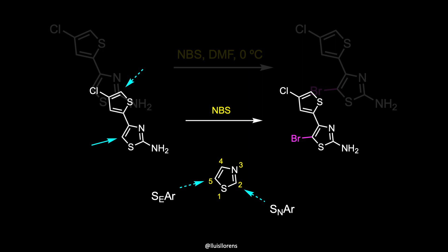Thus, activation of the thiazole ring by the presence of an amino group at C2, and the activation of the thiophene by the presence of the electron-withdrawing chlorine, might justify the selectivity observed in this bromination step.